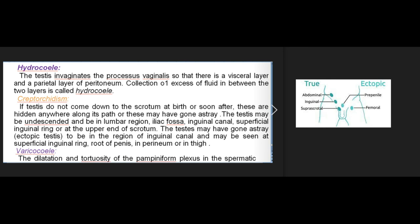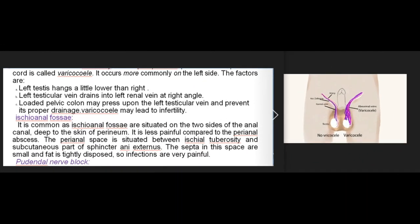Varicocele: dilatation and tortuosity of the pampiniform plexus in the spermatic cord. It occurs more commonly on the left side because: (a) the left testis hangs a little lower than the right; (b) the left testicular vein drains into the left renal vein at a right angle; (c) a loaded pelvic colon may press upon the left testicular vein and prevent proper drainage. Varicocele may lead to infertility.